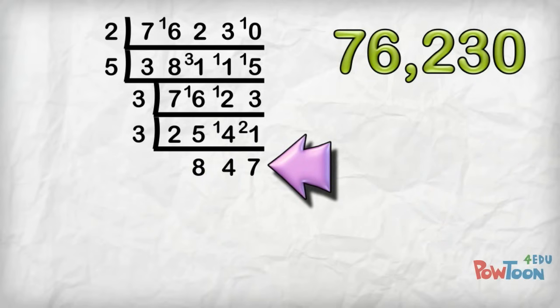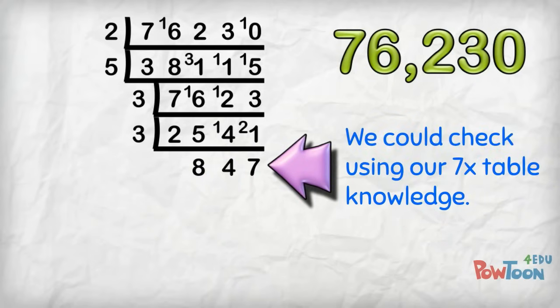And with this number we could check just using our 7 times table knowledge. Look at this, we split the number down. We know that 12 7's are 84 and 1 7 is 7, so we can see even without using the divisibility rule that it would work.